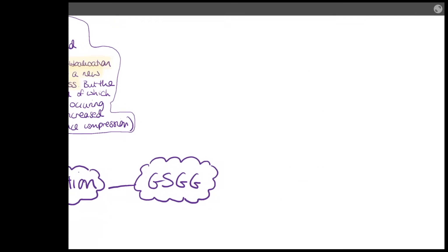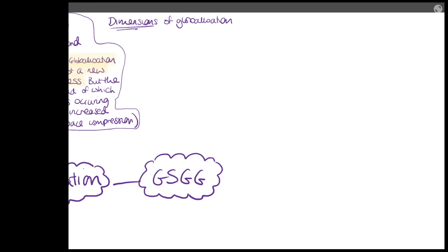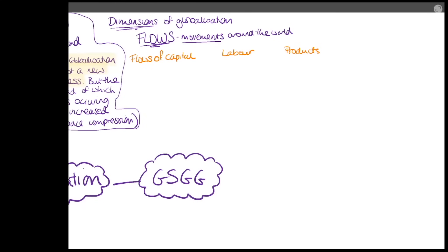Next we're going to look at the dimensions of globalisation. Flows of globalisation are the things which move around the world - what connects people and places. There are sometimes lots of graphs, like flow diagrams, in exams showing these. There are flows of capital, labour, products and services, and information. Flows of capital usually refers to money going around the world, for example investment, trade, or production.